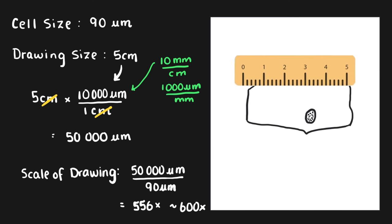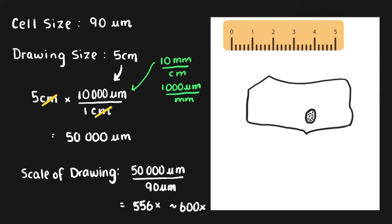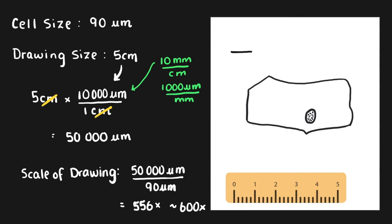Now we want to make a scale bar here. Along our ruler, we're going to draw ourselves a one centimeter line. Our scale bar is going to be smaller than our drawing. We want to figure out how big or what number to put above our scale bar to indicate to anyone looking at the drawing how big that cell is.